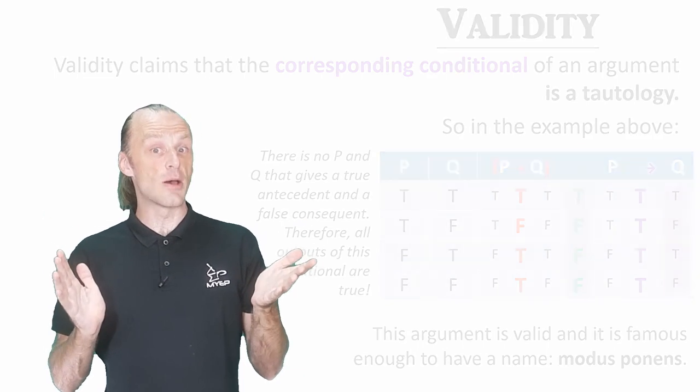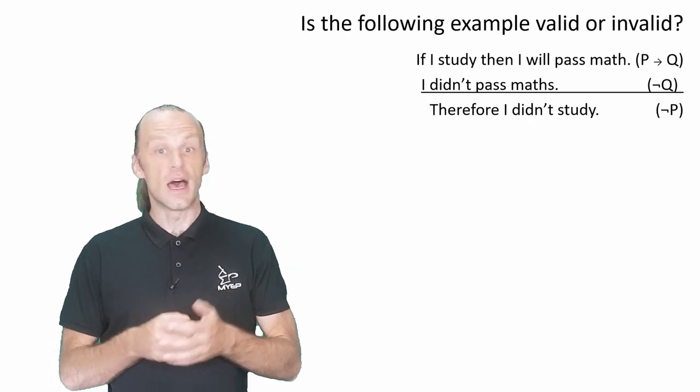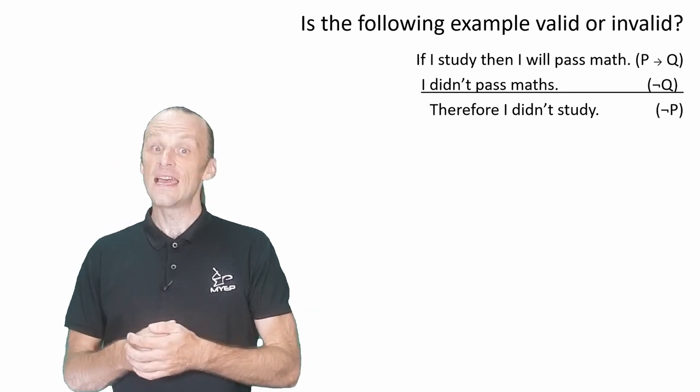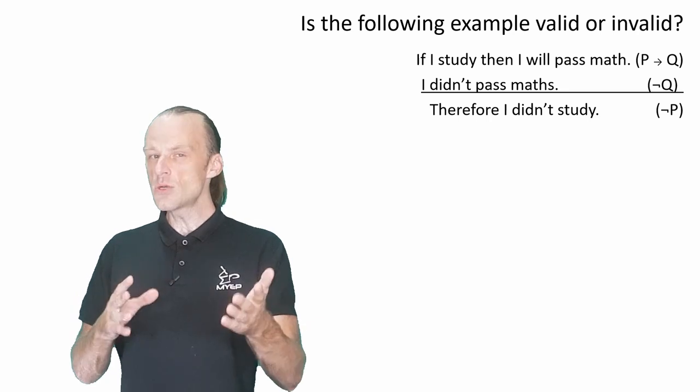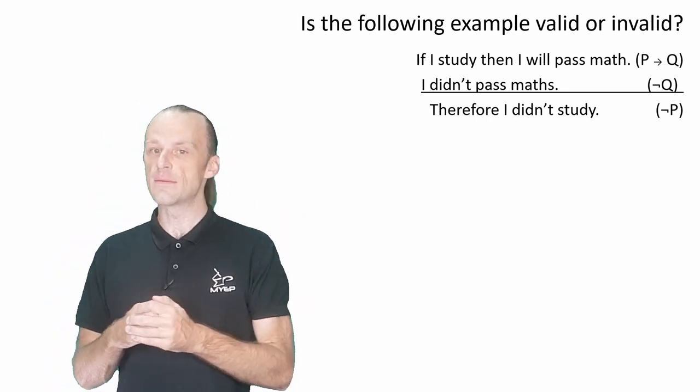How about this next example? If I study hard, then I will pass maths. I did not pass maths, therefore I did not study hard. Is this a valid argument? What is your sense? Pause if you want to think about it, and if you want to work through the columns of the truth table yourself.